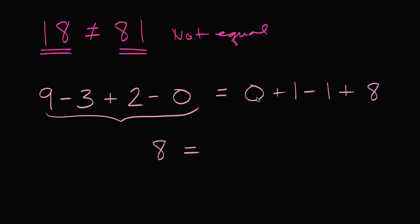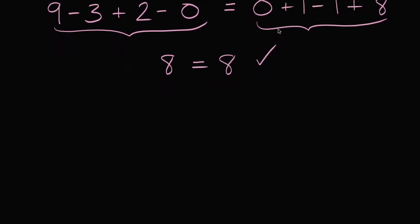And then on the right-hand side, I have 0 plus 1 minus 1. Well, 1 minus 1 is 0. So this is all going to be 8. So this is true. 8 equals 8. This is another way of writing 8. 9 minus 3 plus 2 minus 0. This is 8. And this is also 8. So once again, the equal sign is just saying that this, what we have on the left, is the same as what we have on the right.